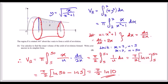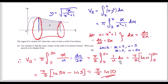Rewriting the integral: the volume is now π times the integral from 5 to 50. Replacing x² plus 1 with u and dx with du over 2x, the x's cancel. Taking the constant outside, it becomes π over 2 times the integral of 1 over u, which is the natural log. Evaluating between 5 and 50, and subtracting logs means dividing inside: ln(50 over 5) equals ln 10. Final answer: π over 2 times ln 10.